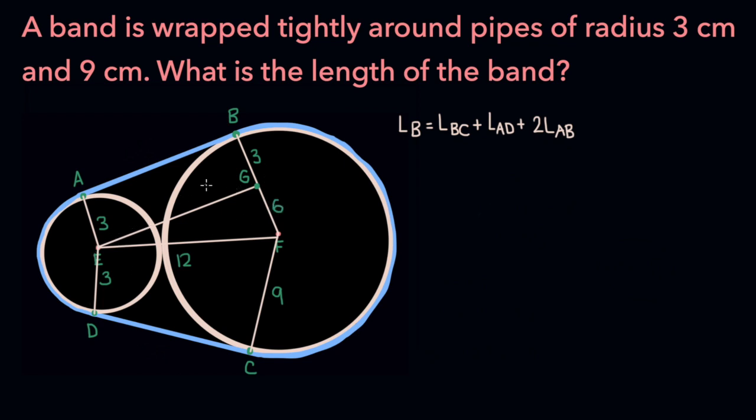And since EG and AB are opposite of each other, they must have the same length as well. So if we can compute the length of EG, we'll know the length of AB as well.